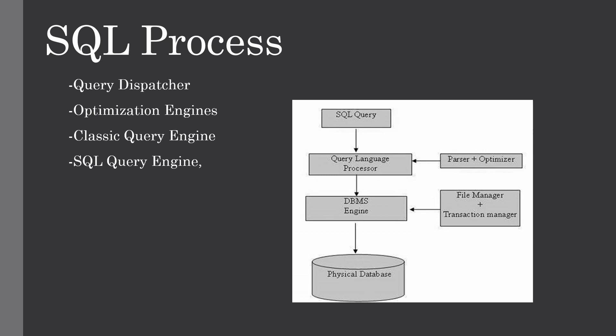The Query Dispatcher routes query requests to either the Classic Query Engine or the SQL Query Engine depending on the attributes of the query — all queries are processed by the dispatcher. The Query Optimizer determines the most efficient way to execute a SQL statement after considering many factors. After the Optimization Engine finds the optimal execution path, the request is routed to either the Classic Query Engine or SQL Query Engine to execute the command.